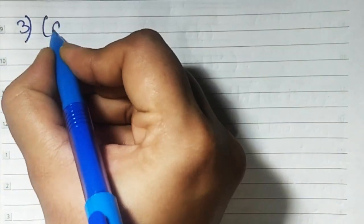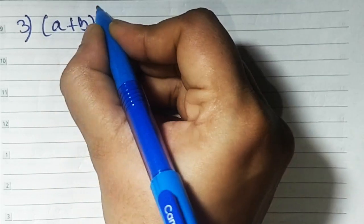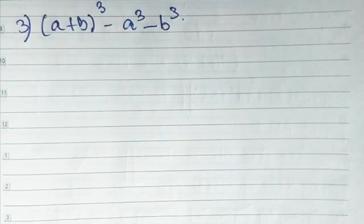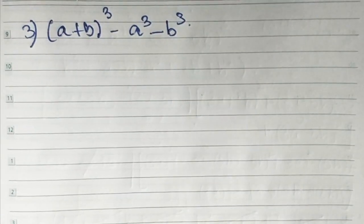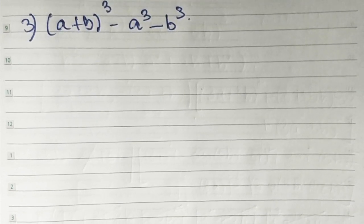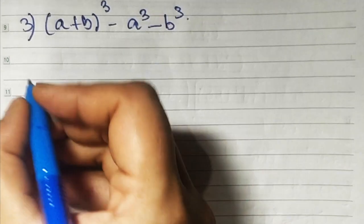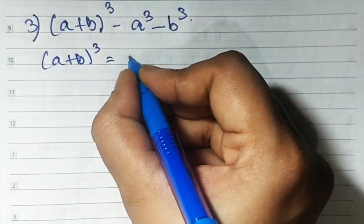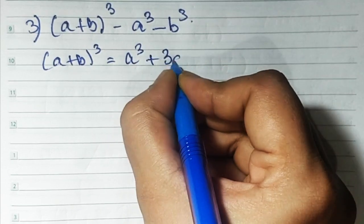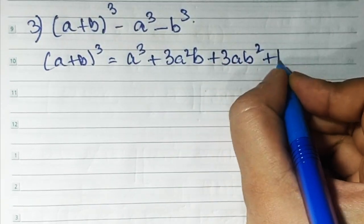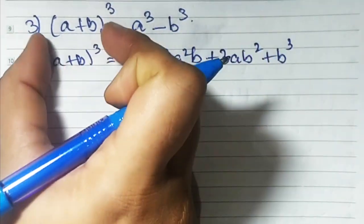Sum number 3 is (a + b) the whole cube minus a cube minus b cube. We will use the a plus b whole cube formula: a cube plus 3a square b plus 3ab square plus b cube. We are going to use this formula for the first term.